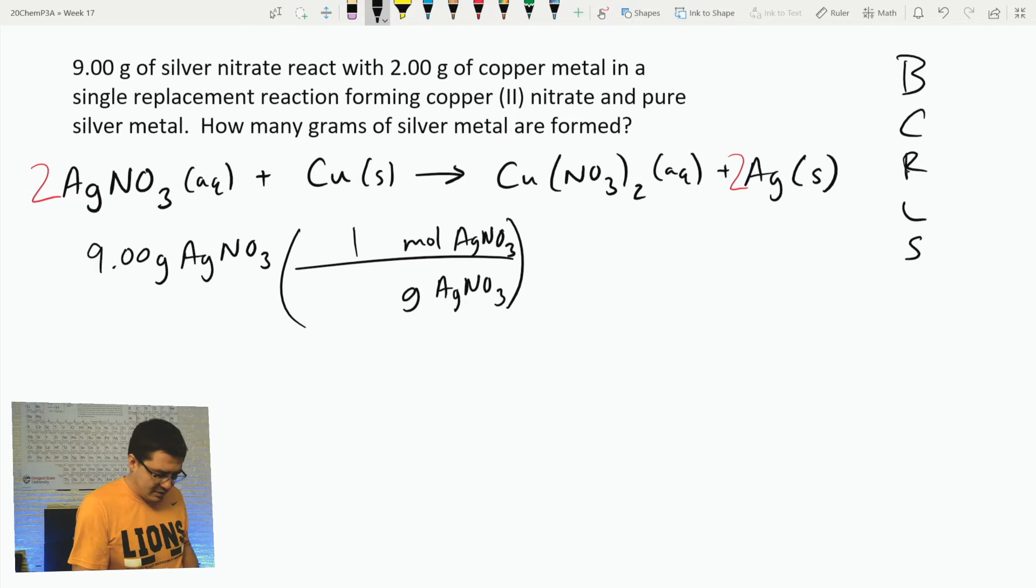So 107.9 plus 14.01 plus 48 comes out to 169.91. So 9 divided by 169.91, that's 0.05297 moles.